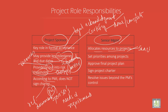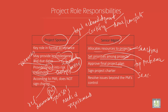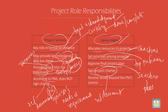Senior management allocates and sanctions resources to the project manager, and sets priorities — giving top preference to the projects. They approve the final project plan, sanction it, and sign the project charter again, as it is a reference document. They also resolve issues beyond the project manager's control, such as budget issues, resource shortages, equipment, and workforce.